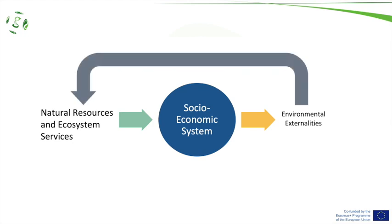Let's make an example. We have oil and gas, and we use it for energy — in our houses, transport — and as we know, this produces CO2. Among other externalities, it produces CO2, which affects climate change, which in turn affects our natural resources as well.